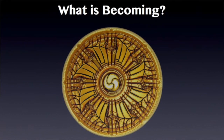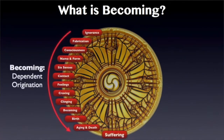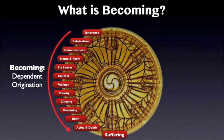Becoming is a process called dependent origination. That means each step of the process is dependent upon the step that goes before it. So from ignorance is coming fabrication, from fabrication is coming consciousness, from consciousness is becoming and name and form and so on, until you get down to birth, aging and death, and suffering.